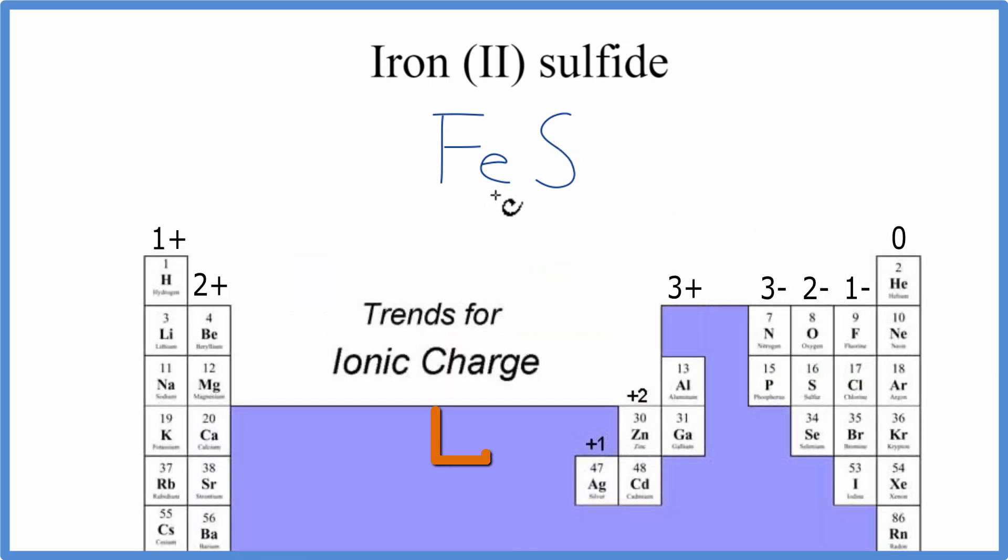With iron, we have a transition metal, so we have a little bit of help with the name here. This (II) right here tells us that the iron has a 2+ ionic charge. These Roman numerals tell us the charge. With sulfur, we go back to the periodic table, and sulfur has a 2- charge.